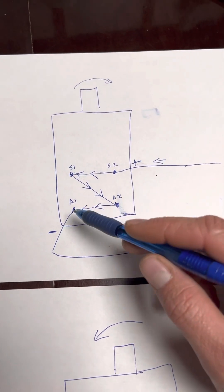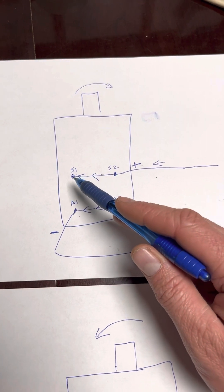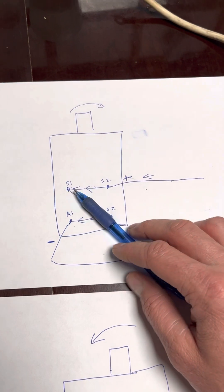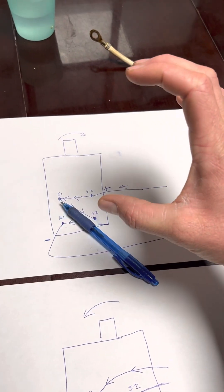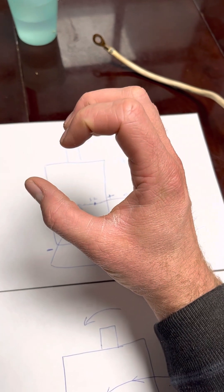And what these stand for is armature 1 and 2, stator 1 and 2. So the stator is the coils around the motor. The armature is the coils on the inside. It's the thing that spins around.